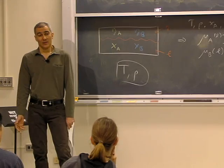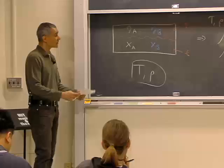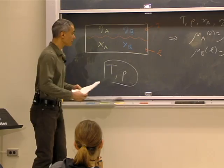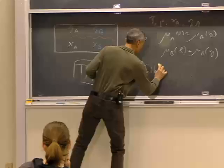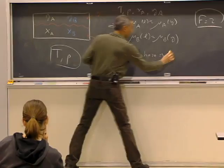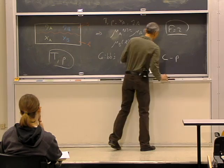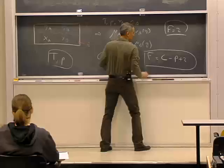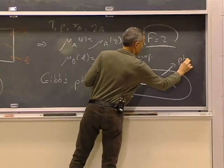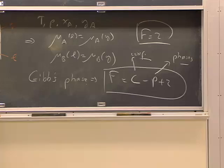This turned out to be a special case, or a subcase, of the more general Gibbs phase rule. The Gibbs phase rule tells you that if you have C components — in this case two — and P phases, the number of degrees of freedom is C minus P plus two. We're going to start today by proving this, and then we'll do more with this problem.